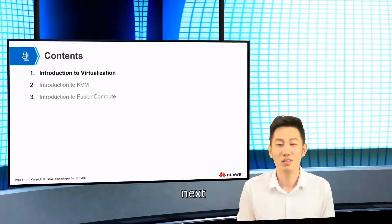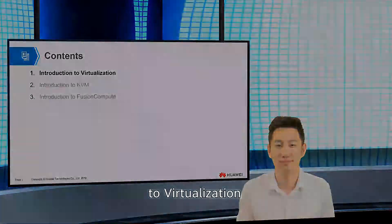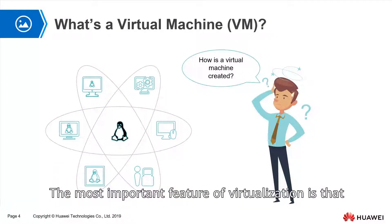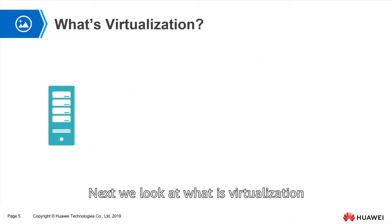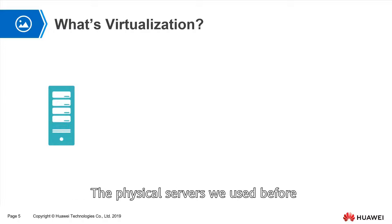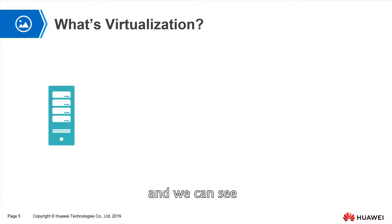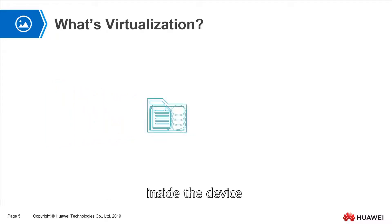Next we will learn the first subsection: introduction to virtualization. The most important feature of virtualization is that the physical machine is converted into a virtual machine. Now let's look at what virtualization is. Virtualization is to virtualize physical devices. The physical devices we used before can all be seen and touched — we can point out each device and the components inside the device.